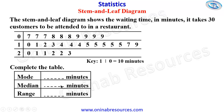This is the table for us to complete. Starting with the mode, we're looking for the particular time that appears the highest number of times. We have 7 appearing three times, 8 appearing four times, 9 appearing three times, and 15 appearing five times — the highest number of times. Therefore the mode is 15 minutes.